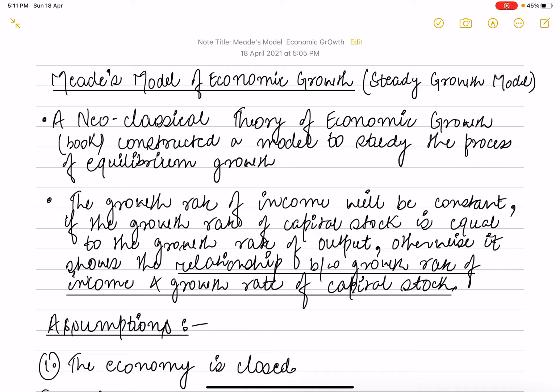In the book named Neoclassical Theory of Economic Growth, this model was constructed to study the process of equilibrium growth. The growth rate of income is constant when the growth rate of capital stock is equal to the growth rate of output. This model shows the relationship between the growth rate of income and growth rate of capital stock.